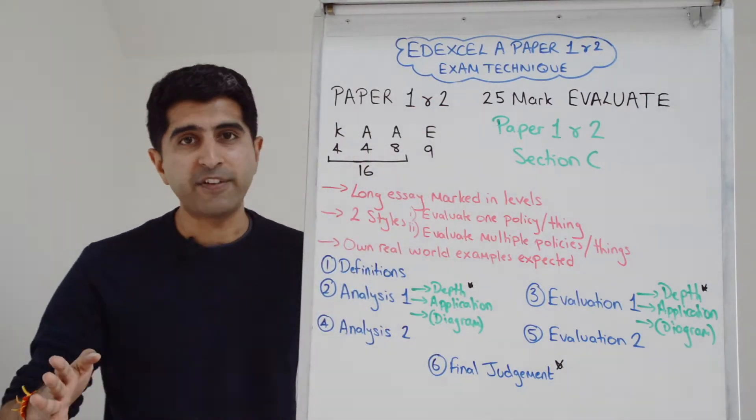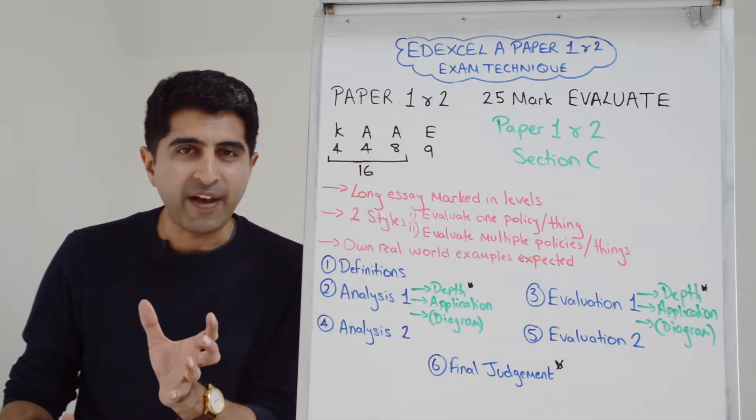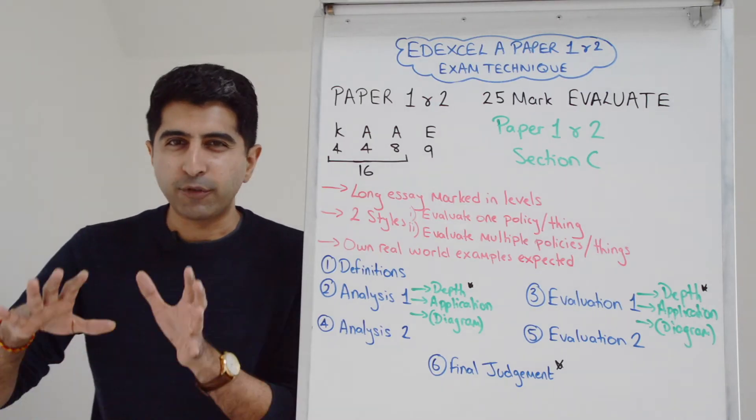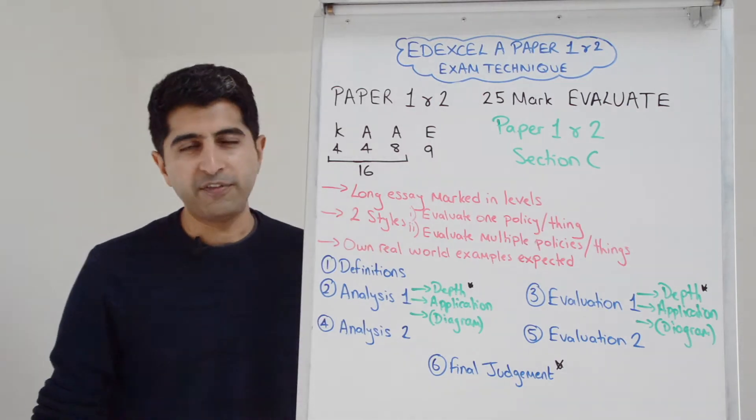The paper three 25 marker is quite unique. It will say evaluate or discuss micro and macro effects. So it's slightly different. I've got a separate video to cover that.